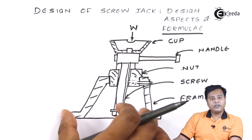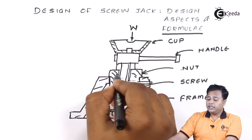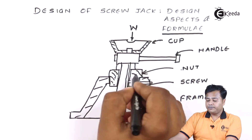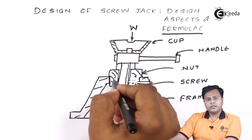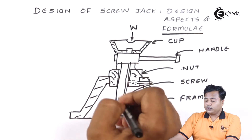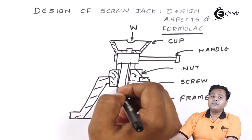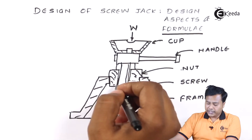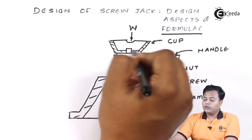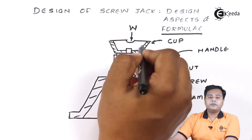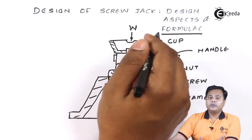The main component is the frame, which is going to be at the basement. On it the nut is mounted or fixed by some fasteners, through which a screw is passed and which is free to rotate. And at the top, the cup is mounted, which is going to sustain the load.